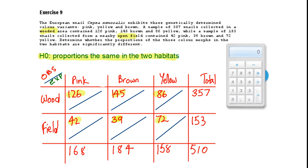Now we have no theoretical expected distribution here. We're going to work out the expected values from the observations themselves. And the way in which we do this is fairly simple. For each cell, we're going to multiply the column total by the row total and divide by the overall total. So for the first cell there, we've got 168 times 357 divided by 510, which gives us an expected value of 117.6.